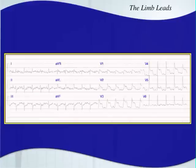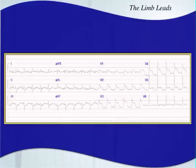Here's an example of a 12-lead EKG. When we say leads, we're talking about different angles of view of the heart's electrical activity. So each lead is a different camera, so to speak. We have 12 different cameras or 12 different views on a 12-lead EKG.